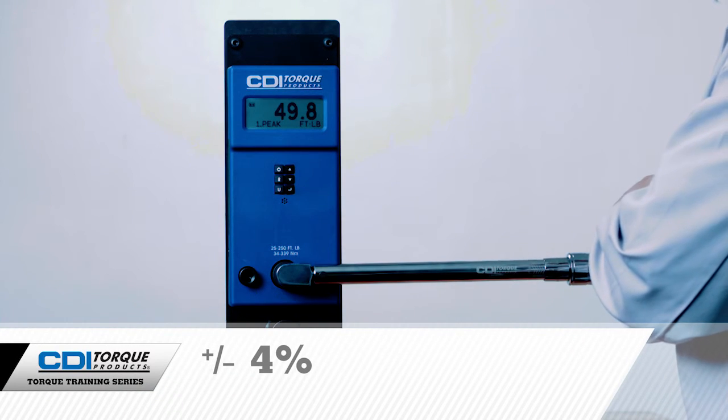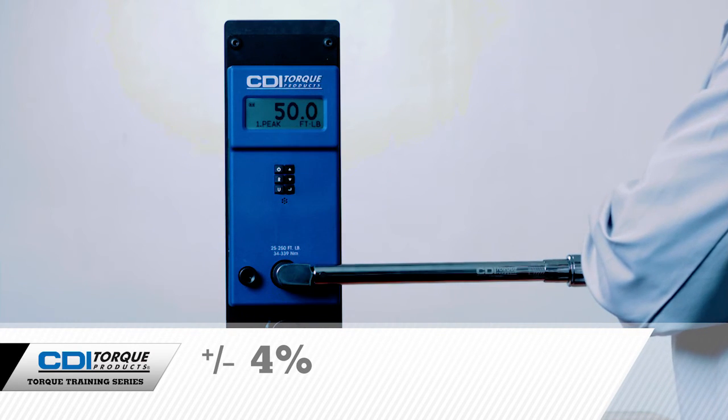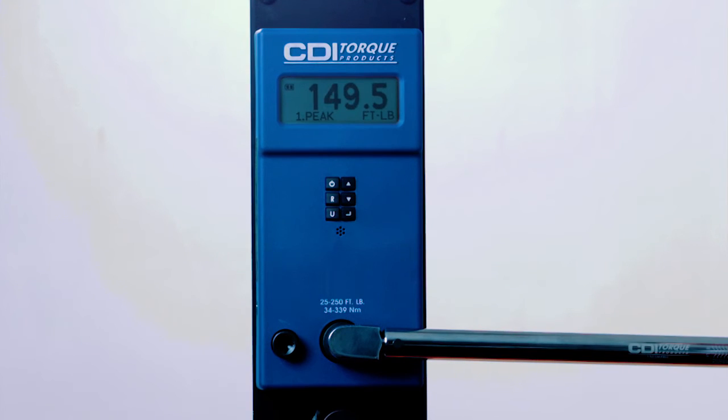The reading on the tester should be within plus or minus 4% of the setting on the torque wrench. If the reading on the DTC is greater than or equal to plus or minus 4% of the setting on the wrench, then the torque wrench is out of tolerance.